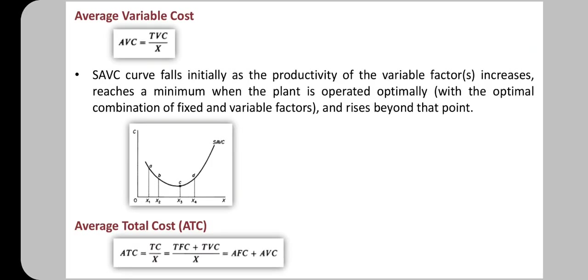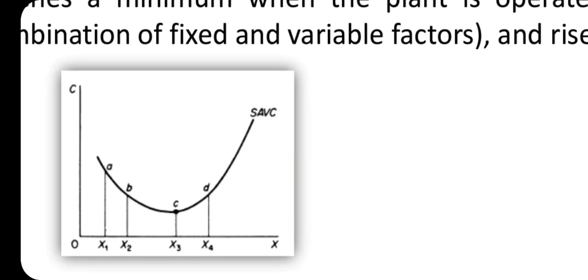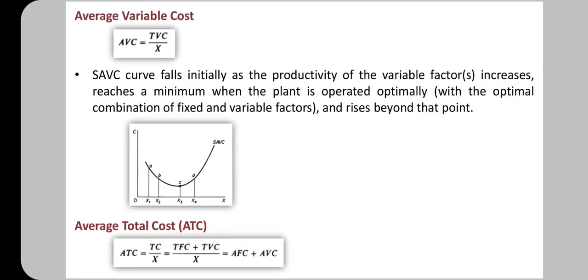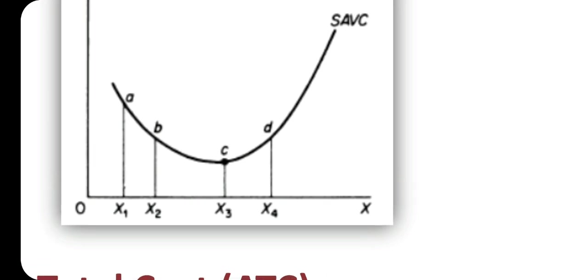Now coming to average variable cost: total variable cost divided by the number of units of output produced. The short-run average variable cost curve falls initially as the productivity of the variable factors increases. The average variable cost falls, reaches a minimum point. Point C is the minimum point of average variable cost.